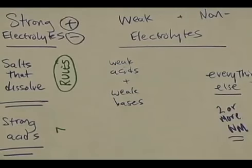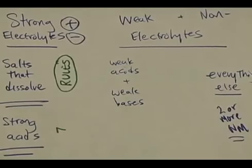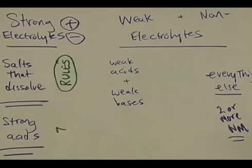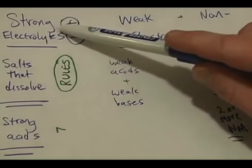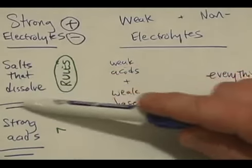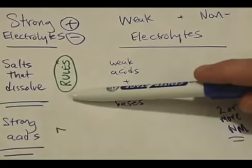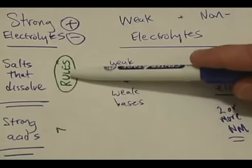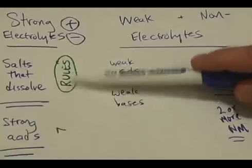At the beginning of this chapter, we talked about how the key is to know which are the strong, weak, and non-electrolytes. The strong electrolytes include salts that dissolved in water, and to decide what those are, we needed the solubility rules that you memorized.